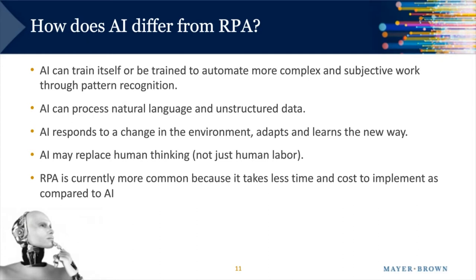RPA is fixed and can break if the environment changes, whereas AI is designed to respond to changes in the environment and adapt and learn, so it can be used in places where a process isn't repetitive enough to trust RPA. Similarly, RPA allows you to replace human labor and tasks, whereas AI may allow you to replace human analysis and human thinking. The counterweight against these advantages of AI is that it is typically more time-consuming and costly to implement than RPA, which is why we currently see more RPA than AI in practice.